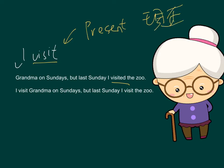So why it is in present tense is because now I'm saying 'I visit grandma on Sundays.' This is my habit. 在一個習慣的時候，我們會用現在式去形容那個動作，那所以自然那個動詞都是現在式啦。